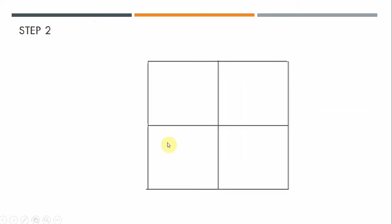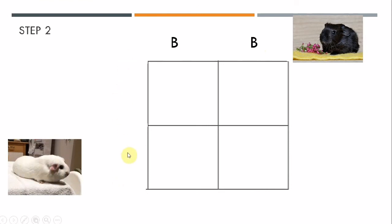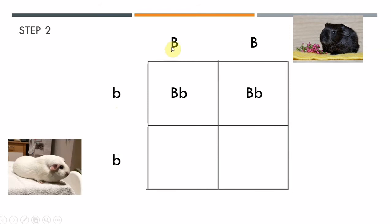Step two: draw a Punnett Square. On the top part of the Punnett Square, we place the father, who had the dominant trait represented with capital B. On the side of the Punnett Square, we represent the mother, who had the recessive trait represented with lowercase b. Now we cross them — this letter B with this one. Since there is a capital letter B, we write it first and then the lowercase b. We do the same with the rest, always writing the capital letter first.